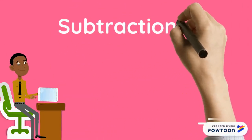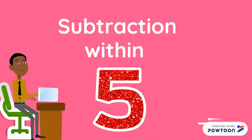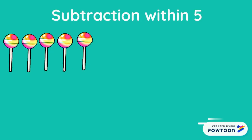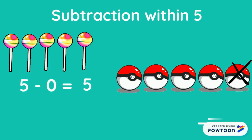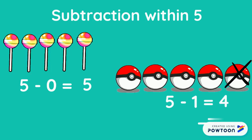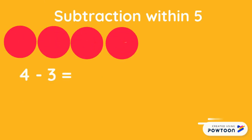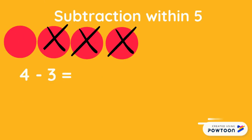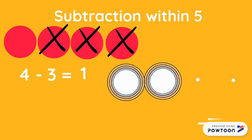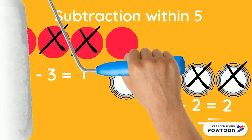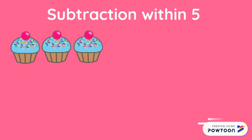Get ready. Now we're going to practice subtraction within five. Five minus zero equals five. Five minus one equals four. Four and you take away three equals one. Four and you take away two equals two.